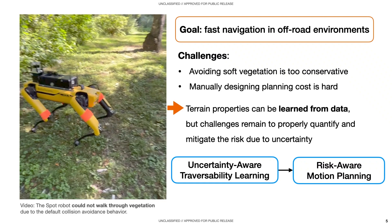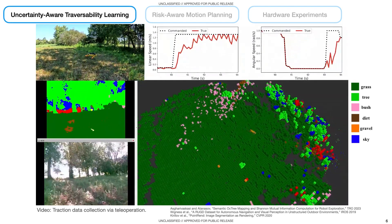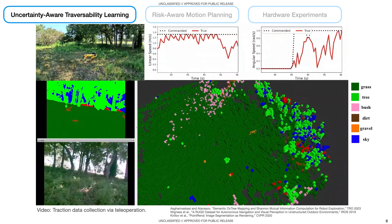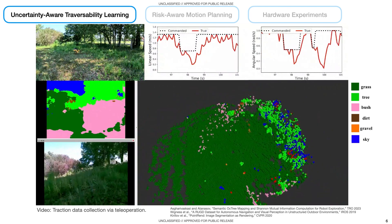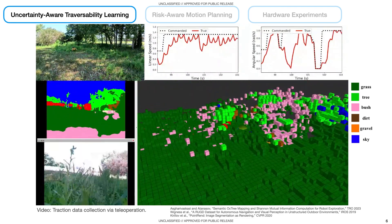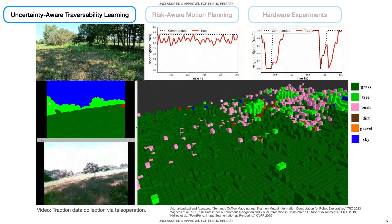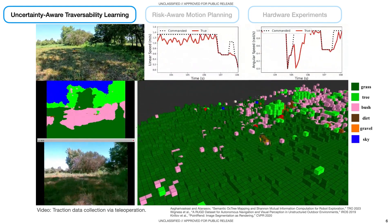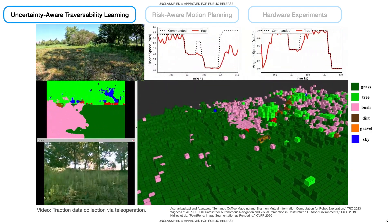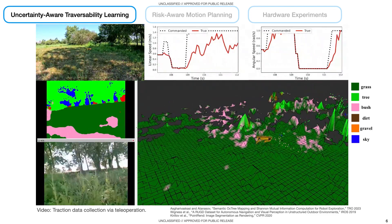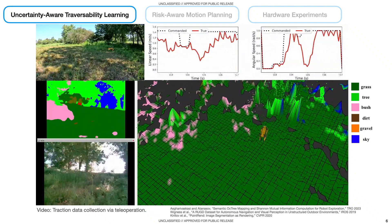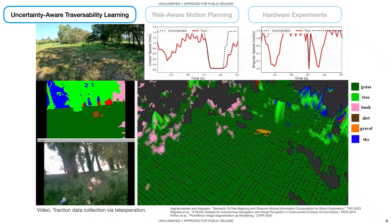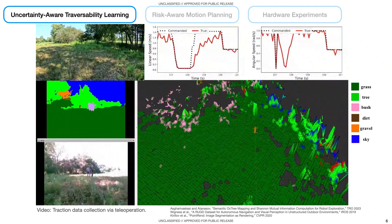This work considers both the upstream uncertainty-aware traversability learning problem and the downstream risk-aware motion planning problem for fast navigation. We leverage both semantic and elevation information to infer terrain traction, which captures how well the robot can achieve the desired velocities. Terrain semantic and elevation features were obtained by building a semantic octomap that fused semantic point clouds from projecting image semantics onto lidar points. During data collection, we drove the robot over interesting terrains and recorded the commanded velocities and the true velocities achieved by the robot, as shown on the top.